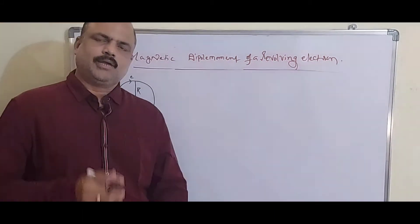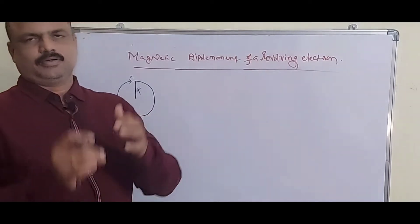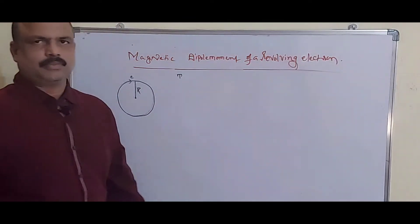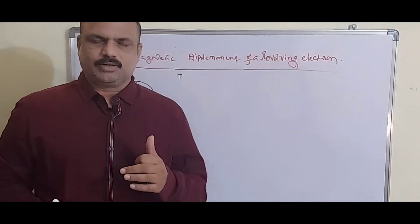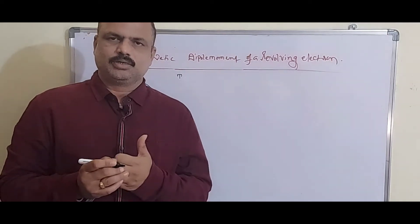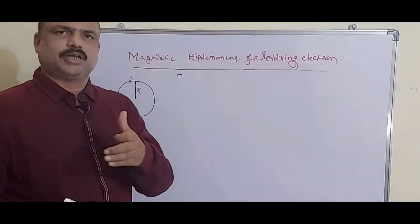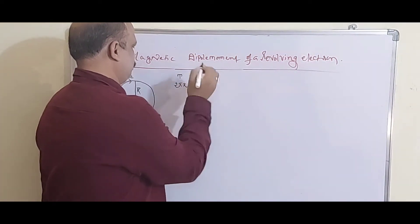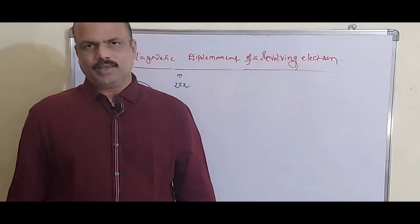The time taken to complete one rotation is T. Whenever this electron completes one rotation, the total distance traveled by this electron is 2πr.